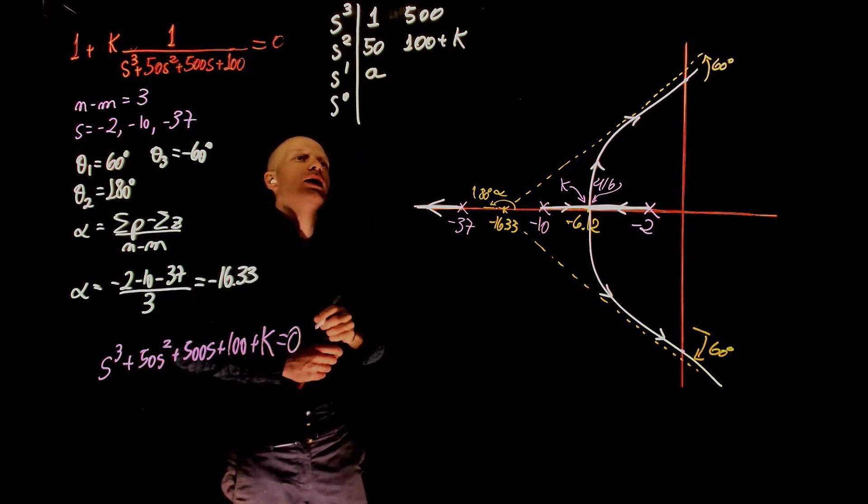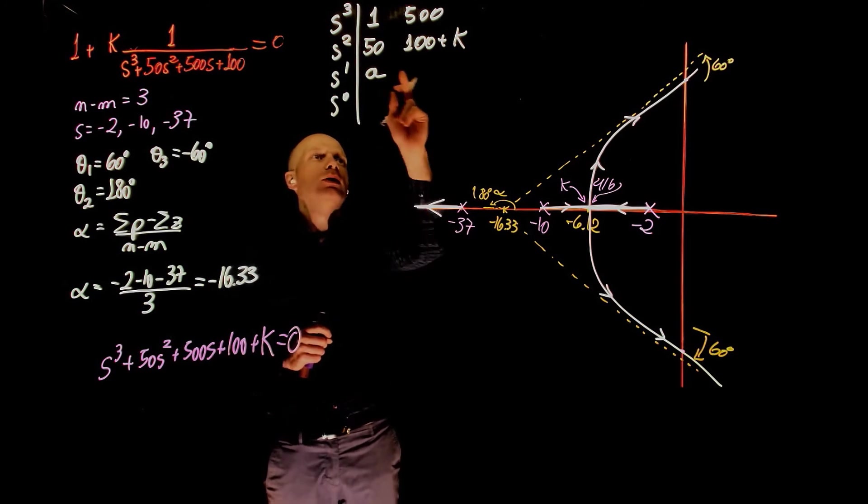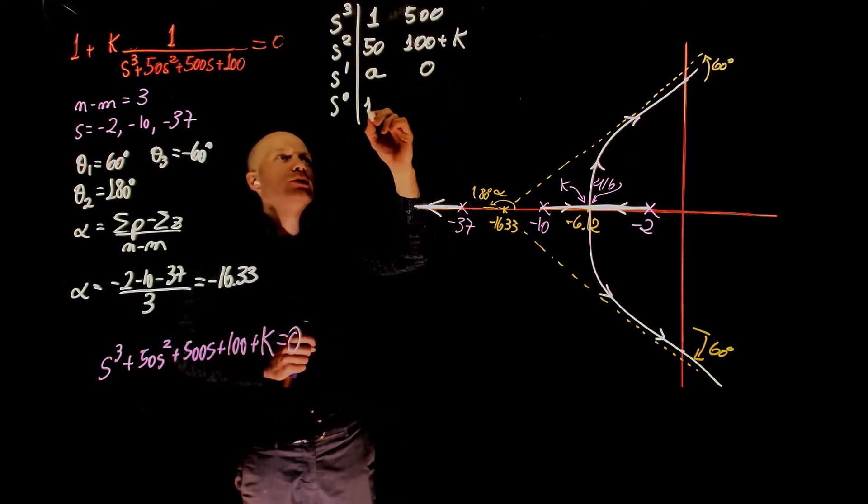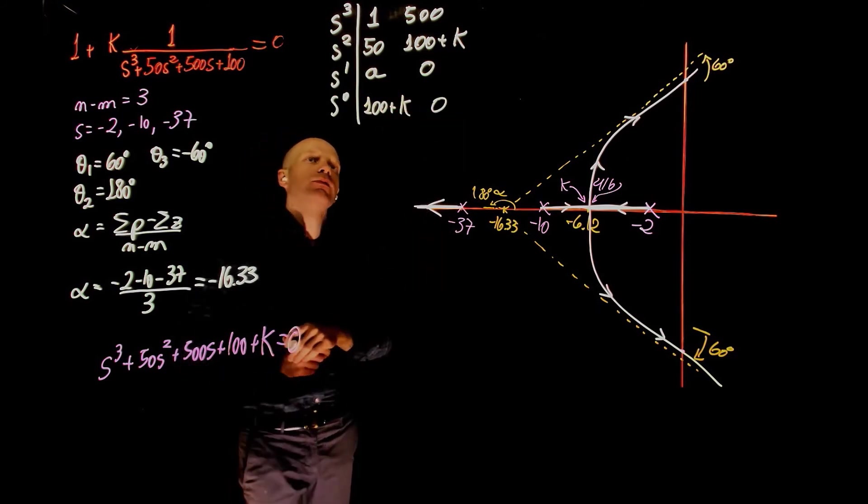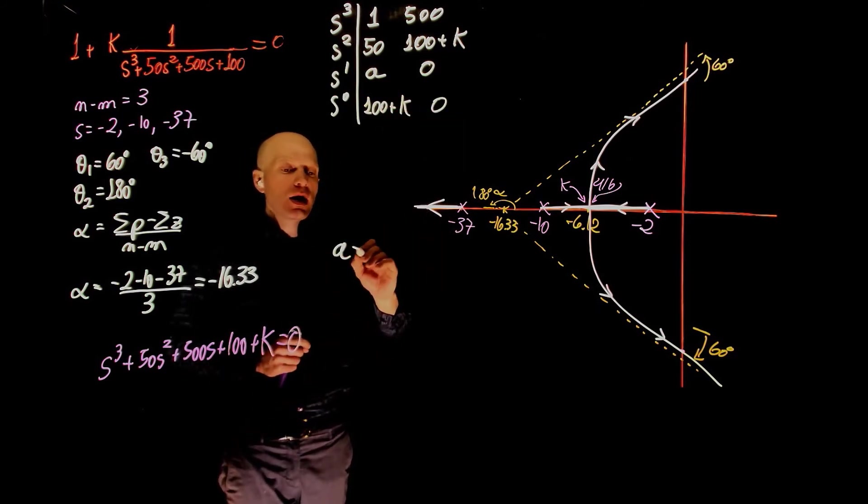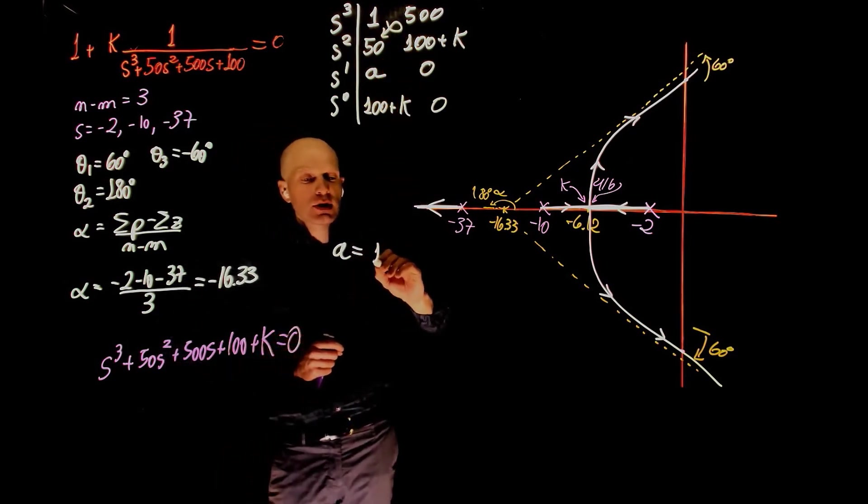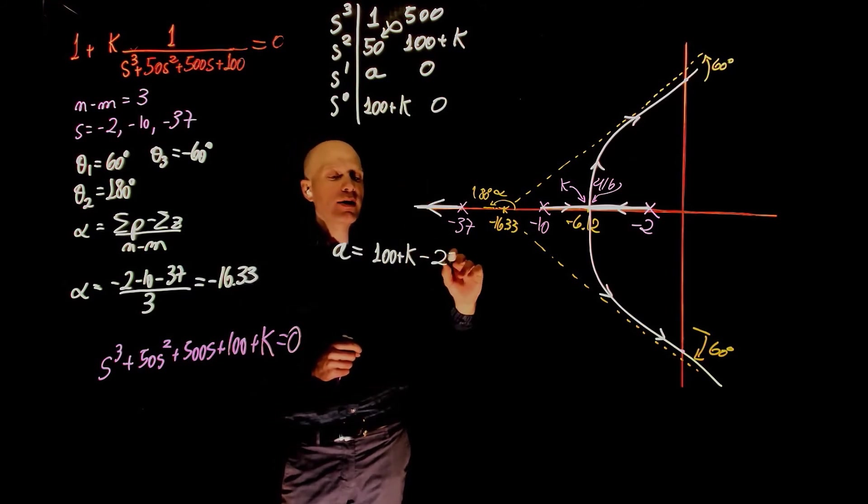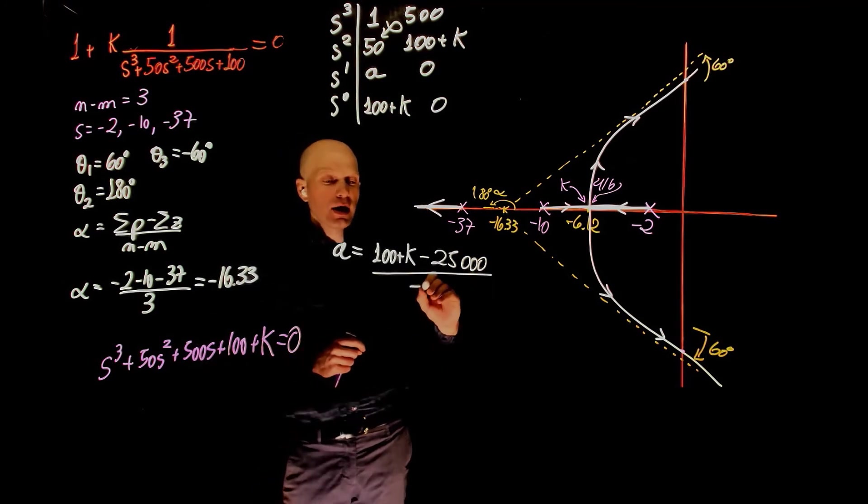This value here, let's call that a. We will determine that later. This value here will be 0. And because this value is 0, then the value down here is 100 plus k. And the value there is 0 as well. What is a? A is the cross multiplication here, 100 plus k minus 25,000 divided by negative 50.